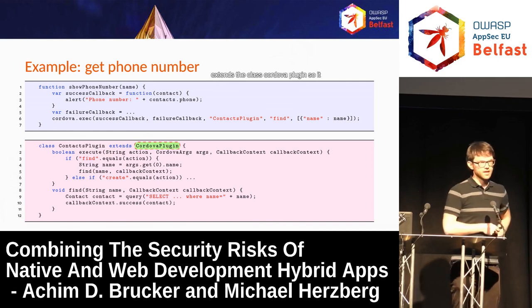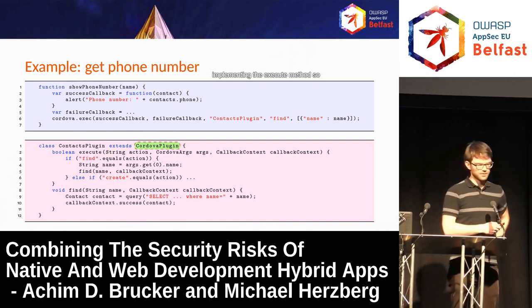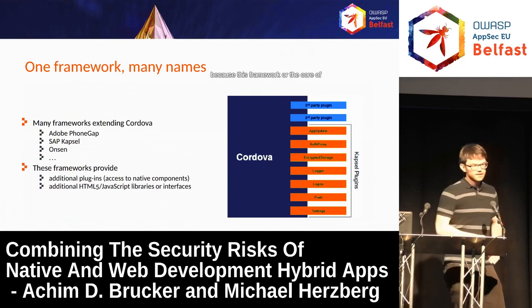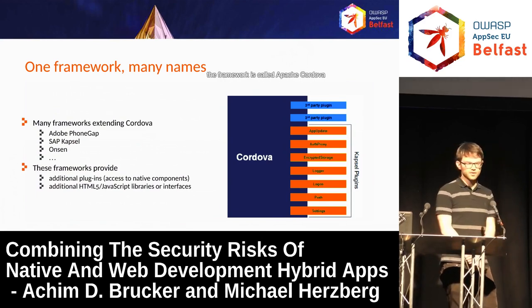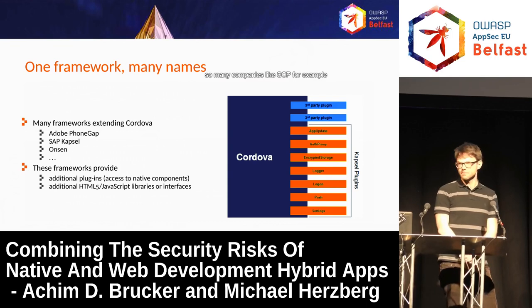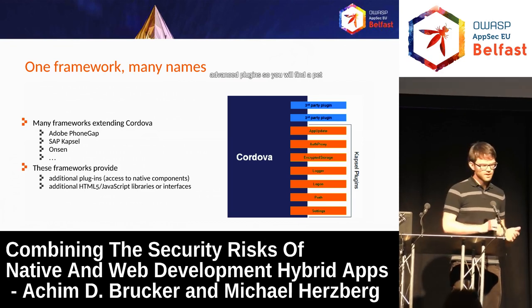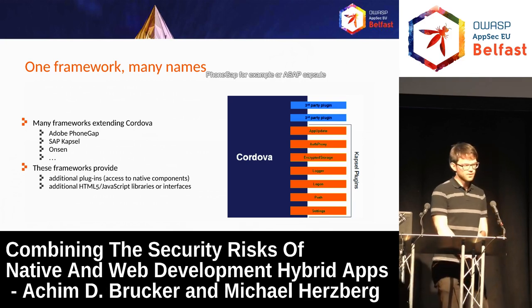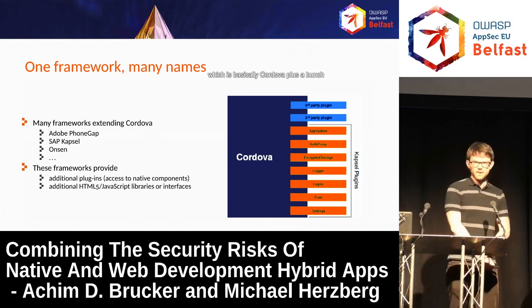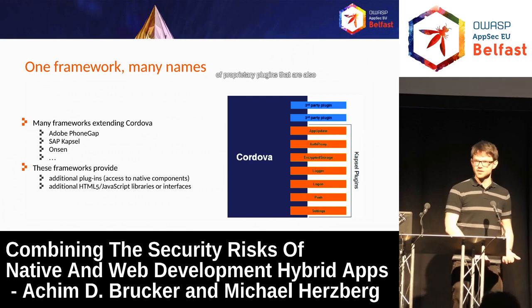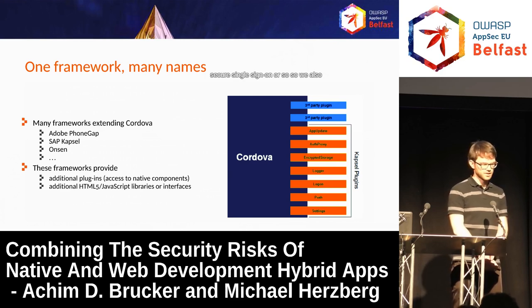The Java side extends the class CordovaPlugin and provides this feature by implementing the execute method. We call this framework Apache Cordova, but it actually has many different names. Many companies like SAP provide a bunch of advanced plugins. You will find Apache Cordova under the hood of Adobe PhoneGap, or SAP Kapsel, which is basically Cordova plus a bunch of proprietary plugins provided for features you would need in an SAP app, like secure single sign-on.